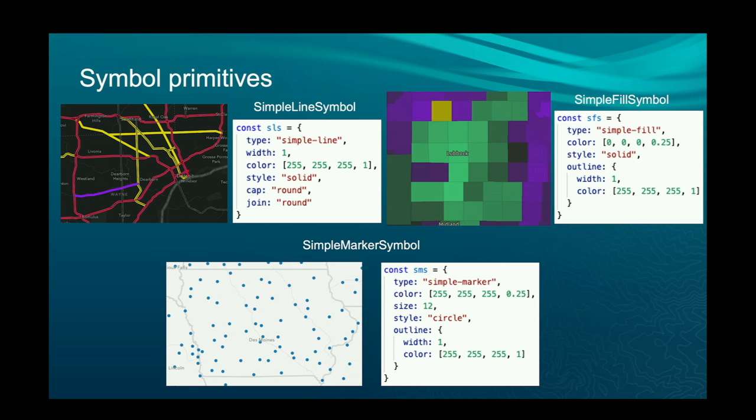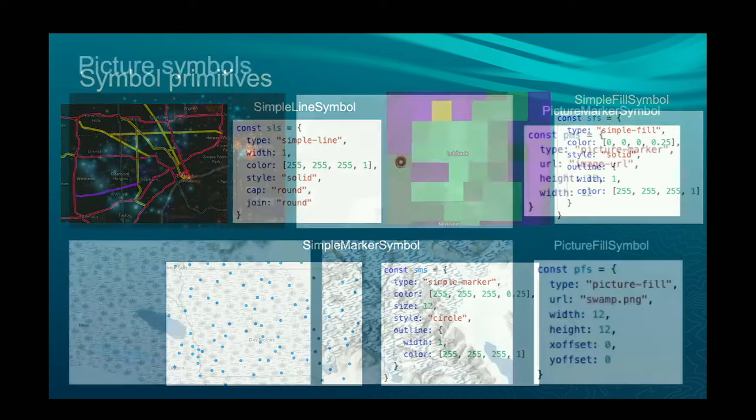Fundamentally, the API is pretty simple for each of these. You can define a color, an outline, a size where appropriate. For lines, you can do a little bit more with the cap and join — basically where the different segments connect — and we offer different styles like hatches, dashes, and dots for lines. That's about the extent of what you can do with simple symbology.